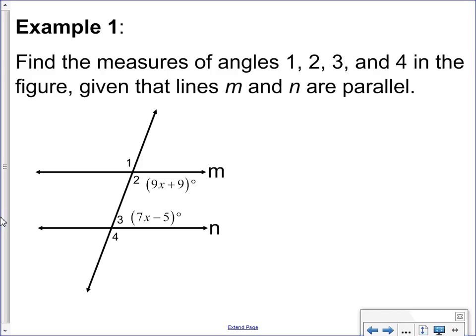Let's put some algebra into this. Given this information, find the measures of the angles, given that M and N are parallel lines. The only information that we're given is the equations or the expressions for angle two and angle three. What's the relationship between angle two and angle three? They do. So we know that angle two plus angle three is equal to 180.